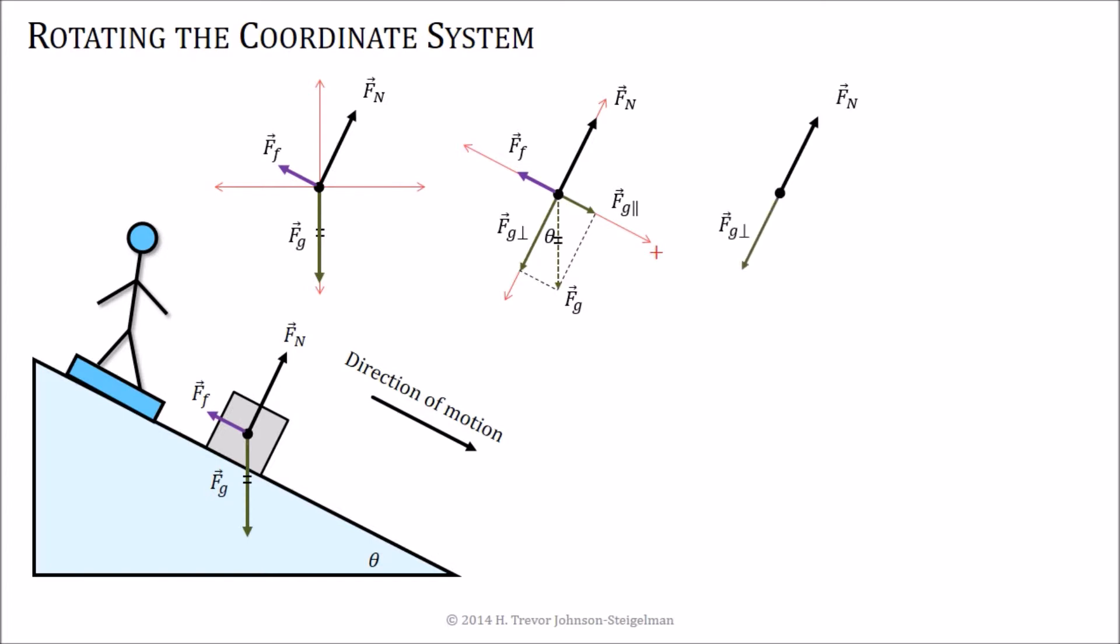Now, if we look at those components along the y direction, we've got the normal force, we've got the gravitational force. Again, they're anti-parallel to one another. But in this case, when we look at Newton's second law, the sum of the forces in the y direction, we've again got the normal force and the gravitational force.